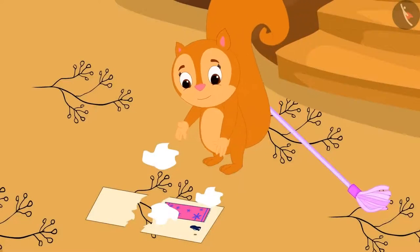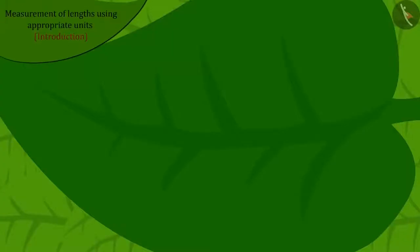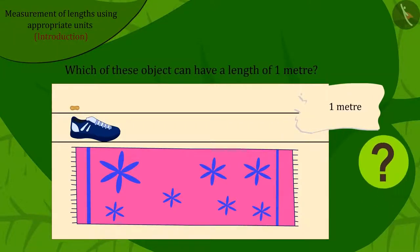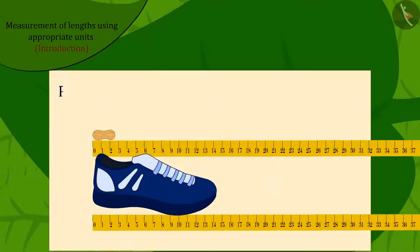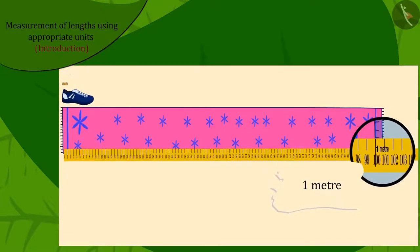She then picked up a piece of paper with 1 meter length written on it. Kids, can you tell which of these items can be 1 meter in length? Absolutely correct! Peanuts and shoe are much smaller than 1 meter. It is possible that the length of the mat is 1 meter. Hence, the correct answer is length of the mat.